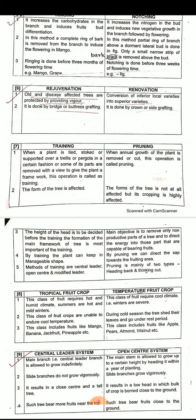The next difference is tropical fruit crop versus temperate fruit crop — a classification based on climatic conditions. Tropical fruit crops require hot and humid climate; summers are very hot and winters are mild.